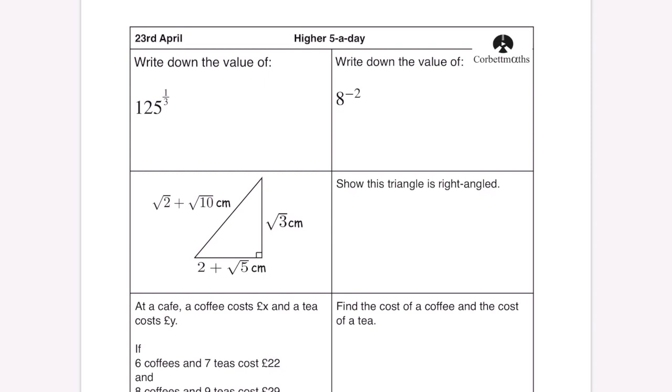So write down the value of 125 to the power of a third. Now power of a third just means cube root. So that's going to be 5. And if it's a negative power it flips a fraction. So 1 over 8 squared which is 1 over 64.